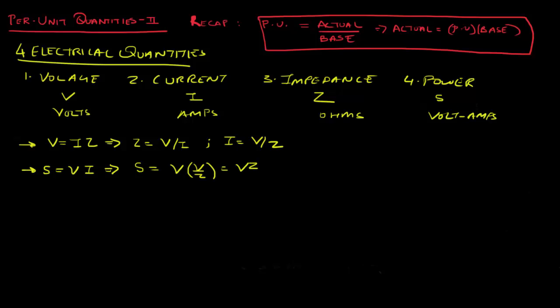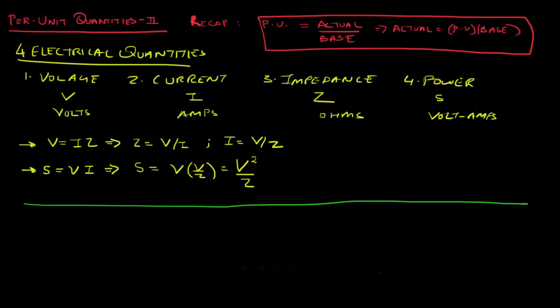Substituting from Ohm's Law, S can also be written as V²/Z. So as long as you know any two of these four quantities you can get the other two. This is important because if I define the base for any two quantities, I can calculate the base for the others — and from there calculate all values in per unit or actual.